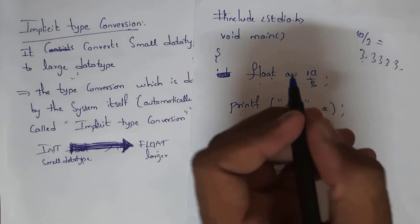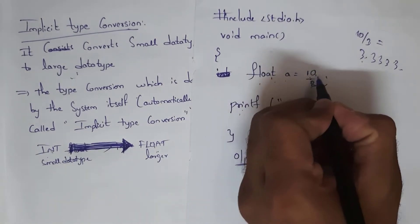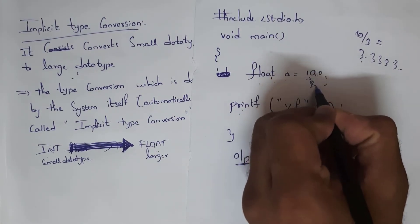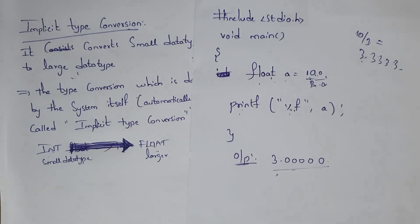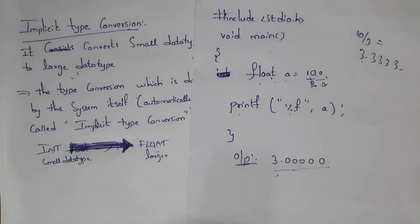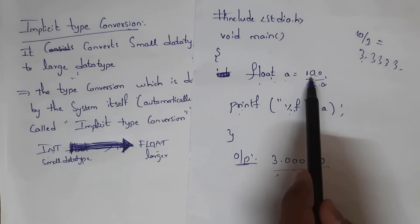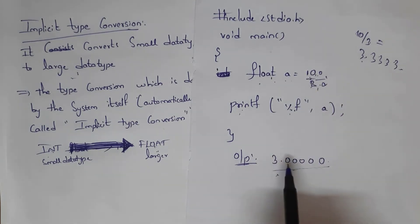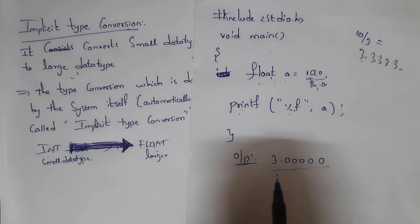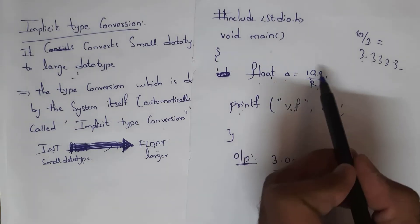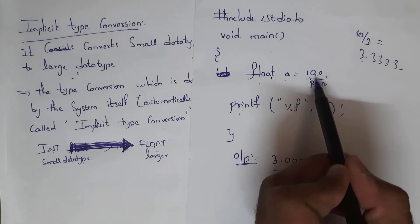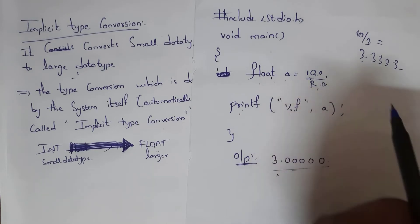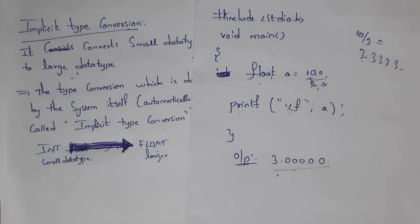To fix this, instead of 10 write 10.0 and instead of 3 write 3.0, then you will get the output as 3.333. Since the system is unable to convert integer values to float automatically, the user should manually correct it. So I manually changed 10 to 10.0 and 3 to 3.0. This is known as explicit type conversion.